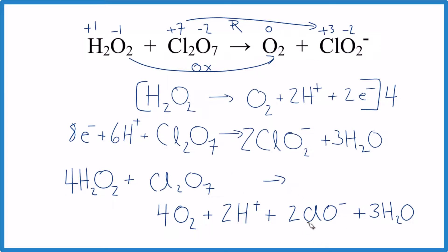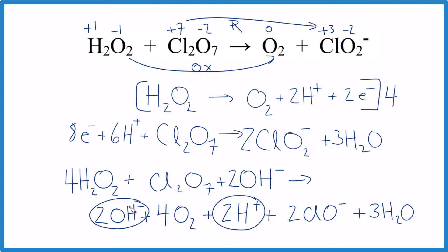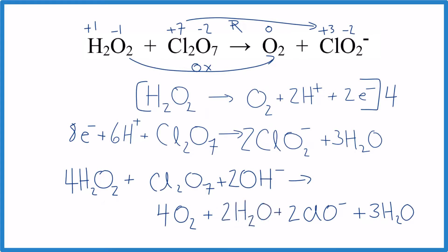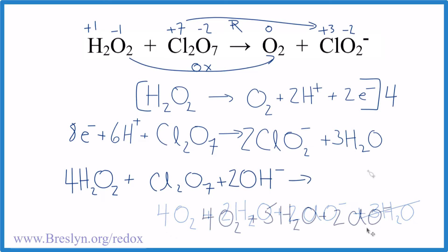To convert from acidic to basic medium, cancel out the two H⁺ ions by adding two hydroxide ions to both sides. On the left, the two OH⁻ and two H⁺ combine to form two water molecules. We already have three water molecules on the left side, so two plus three equals five — making it five water molecules total. That gives us the final balanced redox reaction for H₂O₂ plus Cl₂O₇ in basic medium.